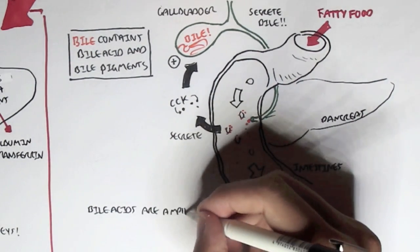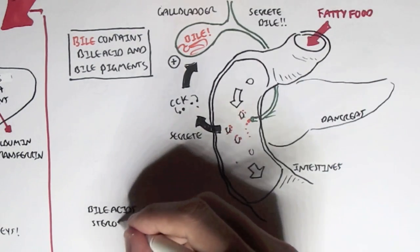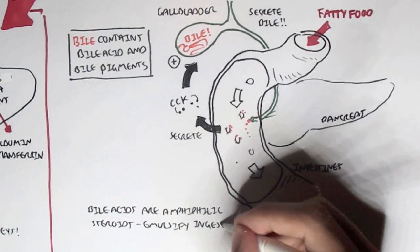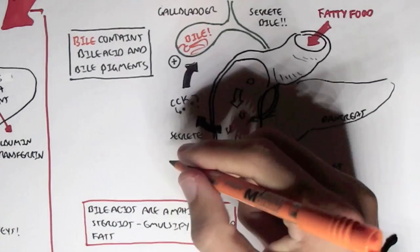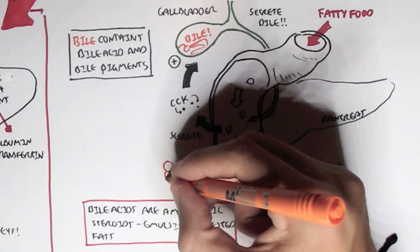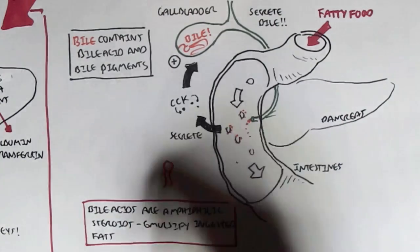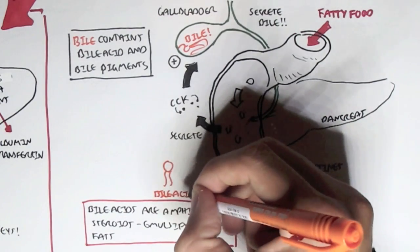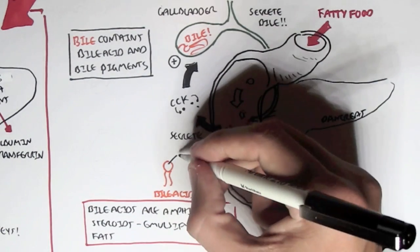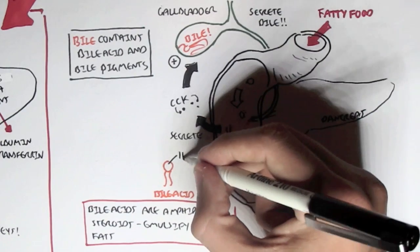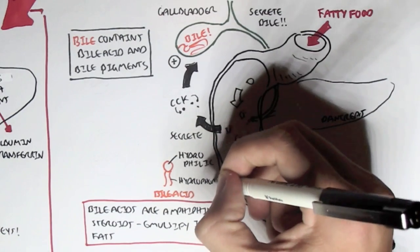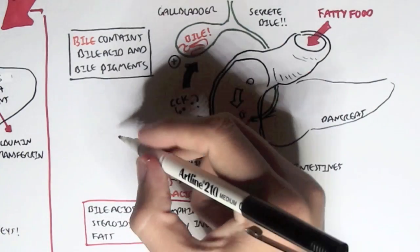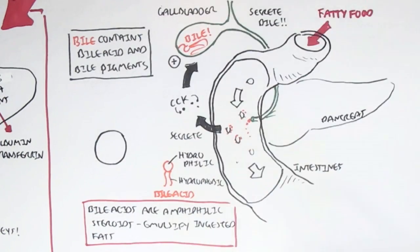Bile acids are amphiphilic steroids, and they emulsify ingested fats, so that the fats can be easily digested and absorbed by the small intestines. Bile acids are amphiphilic steroids. What does this mean? Well, it means that if this was a bile acid, it would have one side which is hydrophilic, which means it loves water, and the other side which is hydrophobic, which means that it hates water.